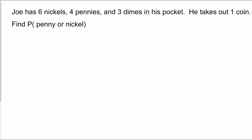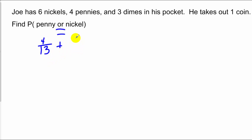Joe has six nickels, four pennies, and three dimes in his pocket. He takes one coin out and we want the probability of a penny or a nickel. Since he's only pulling one coin, it can't be both a penny and a nickel — these are mutually exclusive events. Probability of a penny is 4 out of 13 total coins. Probability of a nickel is 6 out of 13. Add those together to get 10 out of 13.